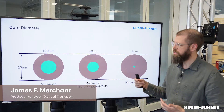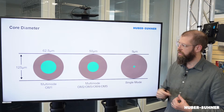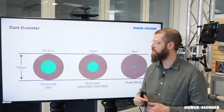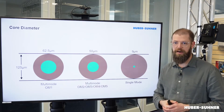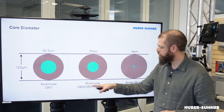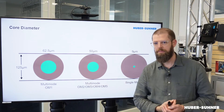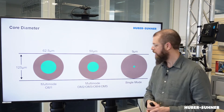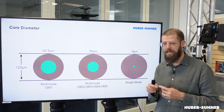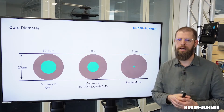The most obvious difference is the core diameter. For multi-mode OM1, we've got 62.5 micrometers. For OM2 up to OM5, we've got 50 micrometers. And for single-mode, we've got that teeny tiny 9 micrometer core diameter.